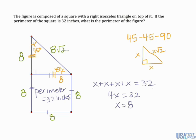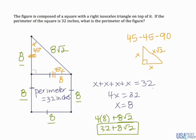So now since I have the length of all the outside sides, I can actually find the perimeter of this composite figure. So I have 1, 2, 3, 4 sides of 8, plus 8 root 2. So that's going to be 32 plus 8 root 2. That's the perimeter of the composite figure.